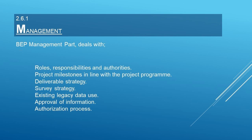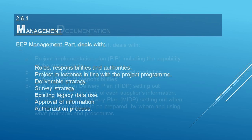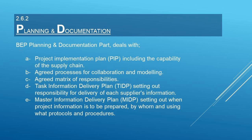The management part also covers deliverable strategy, survey strategy, existing legacy data use, approval of information, and authorization process. The planning and documentation part deals with the Project Implementation Plan (PIP), including the capability of the supply chain, agreed processes for collaboration and modeling, agreed matrix of responsibilities, Task Information Delivery Plan (TIDP) setting out responsibility for delivery of each supplier's information, and Master Information Delivery Plan (MIDP) setting out when project information is to be prepared, by whom, and using what protocols and procedures.